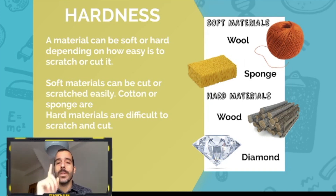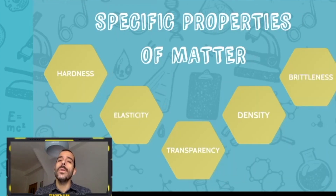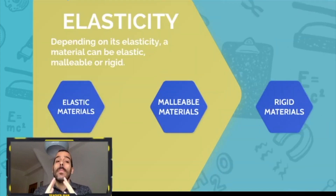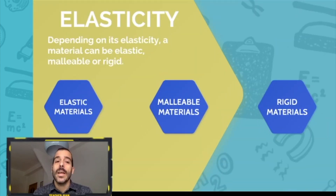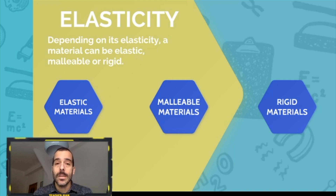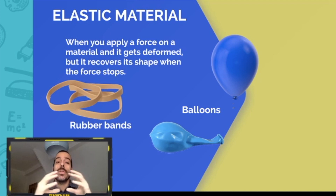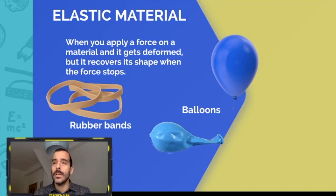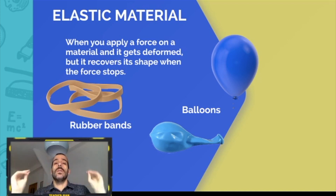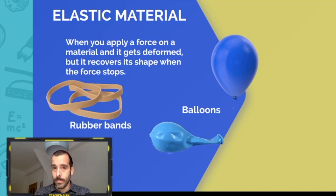Now we are going to see elasticity. Depending on its elasticity, a material can be elastic, malleable, or rigid. Elastic materials — like these rubber bands or balloons — when you apply a force on a material and it changes form but recovers its shape when the force stops, that is an elastic material. You apply force to this rubber band and when you stop, it recovers its original form.